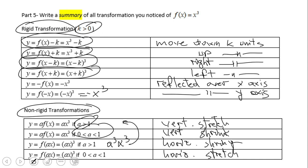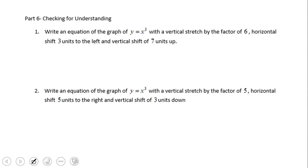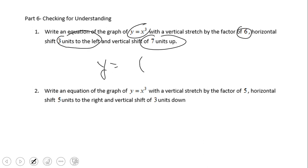Now let's do example number one: write an equation of the graph y equals x cubed with a vertical stretch factor of six, a horizontal shift three units to the left, and seven units up. Starting with the left shift: three units left means x plus three, so (x plus 3) cubed. Then apply the vertical stretch factor of six and shift up seven units.